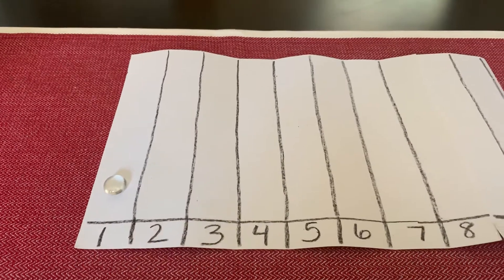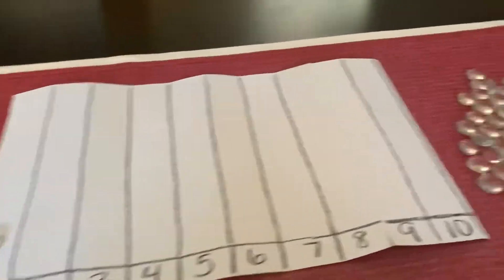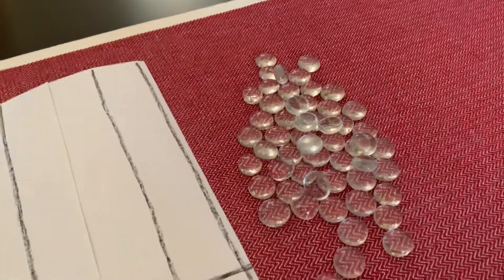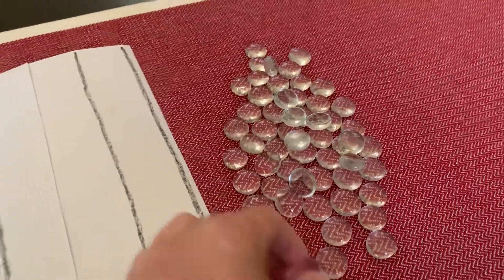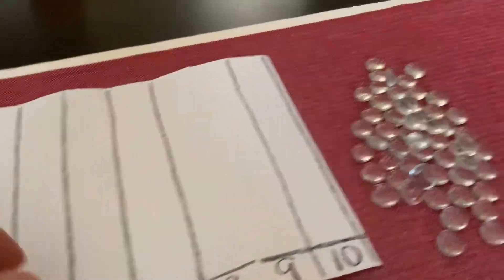All right boys and girls, what number comes next? That's right, the number 2. So help me count 2 jewels. So here's 1 and 2.